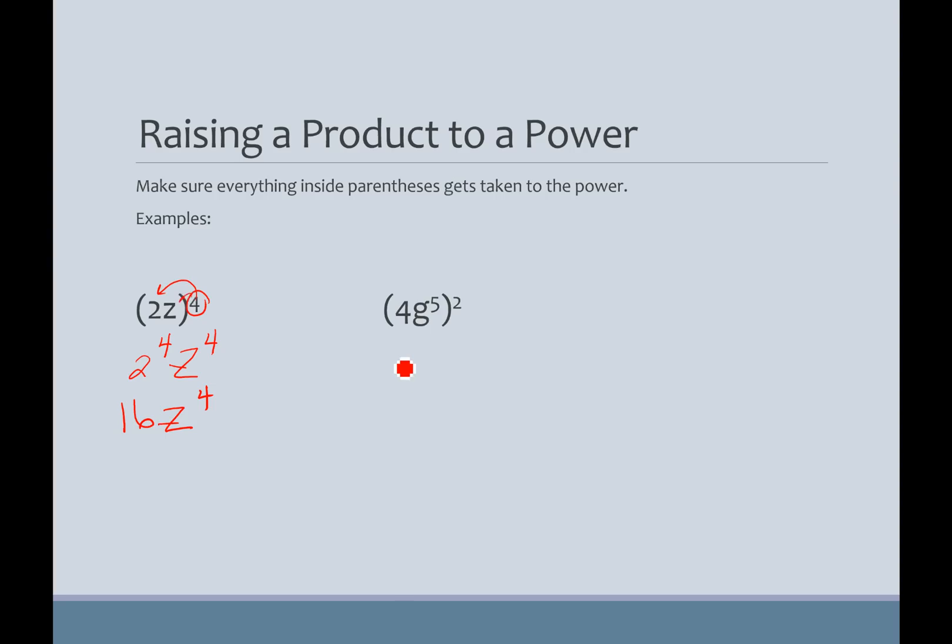This example, I've got four squared times G to the fifth squared, which means we multiply. So, I'm going to get sixteen G to the tenth.